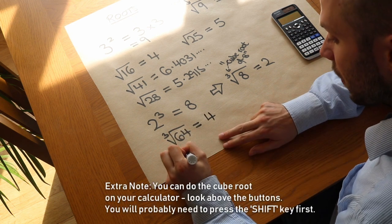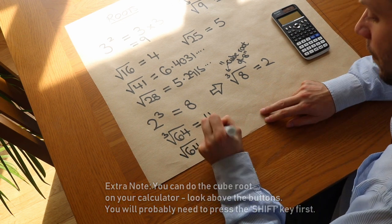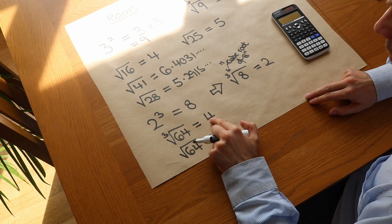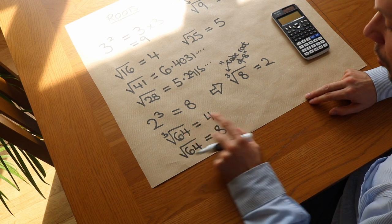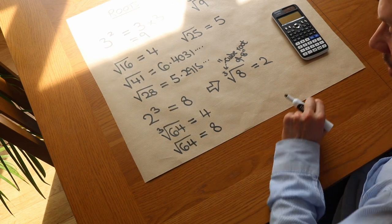Notice by the way that the square root of 64, what number squared gives you 64? Well it's 8. So the cube root of 64 is 4, because 4 cubed is 64. But the square root of 64 is 8, because 8 squared is 64.